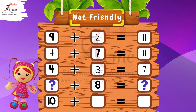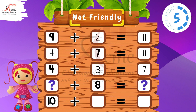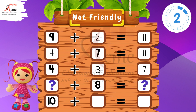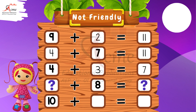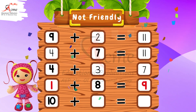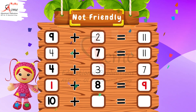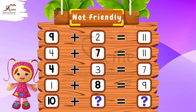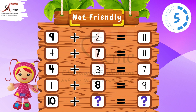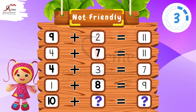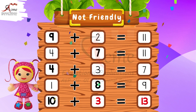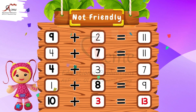What number do we need to add to 8 to make it a non-friendly number? That's right — 1 plus 8 equals 9. Great job. What number do we need to add to 10 to make it a non-friendly number? Yes — 10 plus 3 equals 13. Well done.